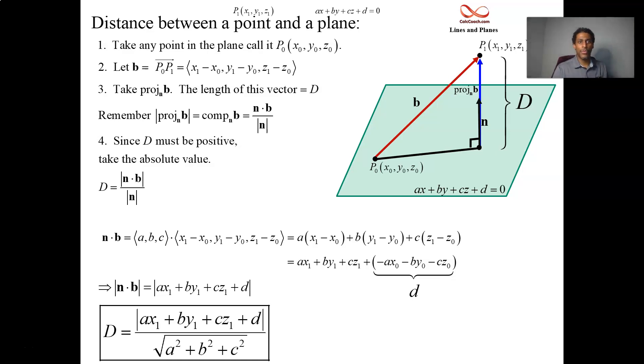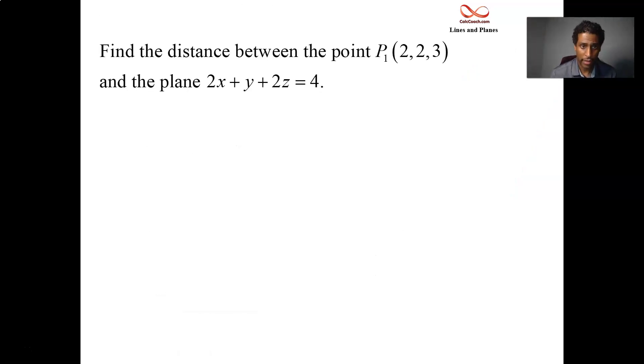Okay, so you'll have seven different variables to plug into this formula: the X1, Y1, Z1, the ABC, and the D. Okay, great. So instead of just giving the formula, we got a chance to see where it comes from. Now let's go ahead and do the calculation for a very specific point and a very specific plane.